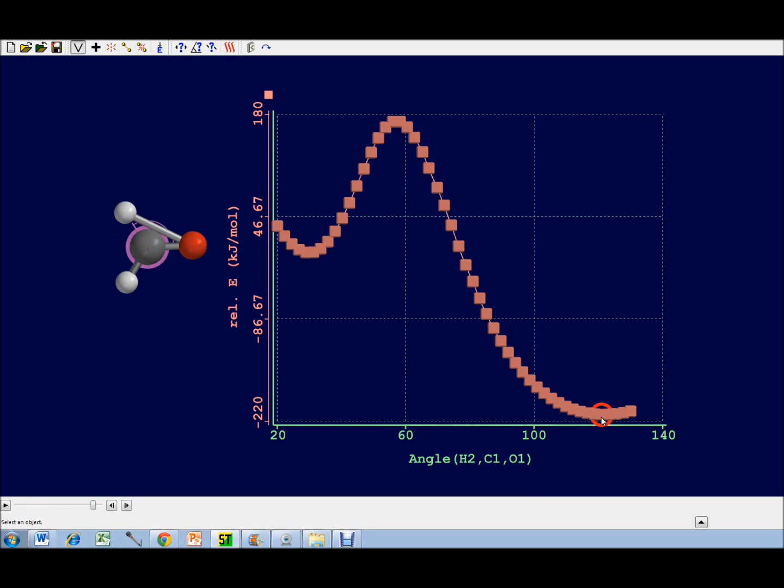That change in energy, you can think of as a change in potential energy, is roughly equivalent to the heat of reaction. In this case, it's a negative change, minus 220 kilojoules per mole, and so heat is released as you go from the reactant hydroxymethylene to the product formaldehyde.